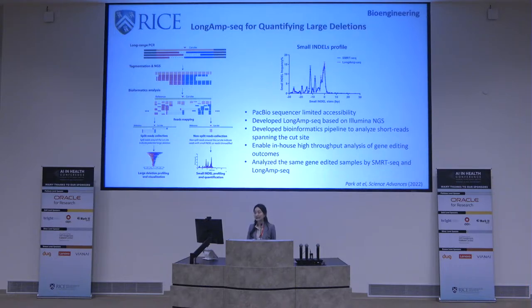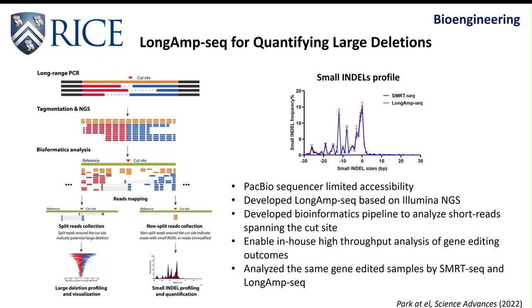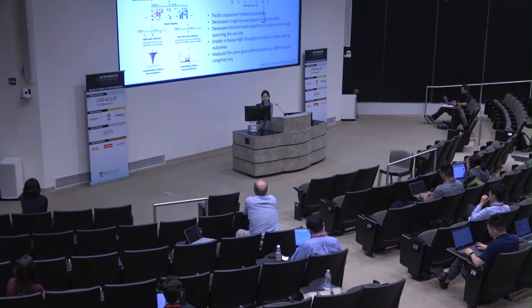We wanted to develop an assay that could be easily adapted by gene editing labs. The major limitation of SMRT sequencing is availability — most genome editing labs have easy access to Illumina short-read sequencers, while PacBio sequencers are usually only available at sequencing cores. So we developed LONG-MUSIC, which is based on long-range PCR followed by fragmentation, adapter ligation, NGS library prep, and sequencing on the MiSeq. We developed a bioinformatics pipeline to filter and analyze short reads spanning the CRISPR-edited cut site. LONG-MUSIC enables in-house, high-throughput analysis of gene editing outcomes, including large deletions.